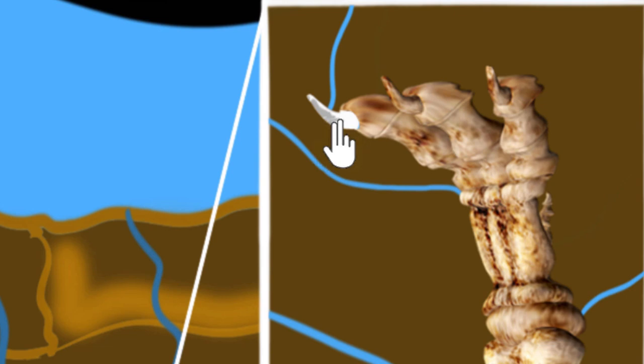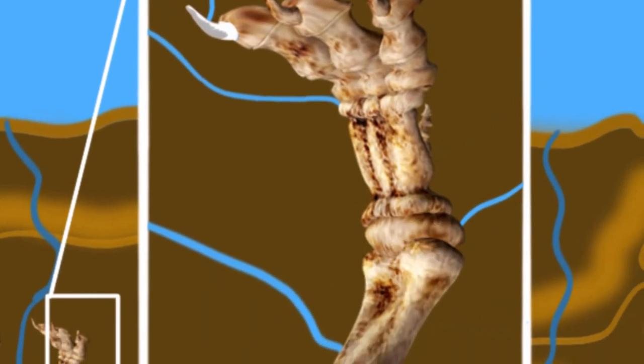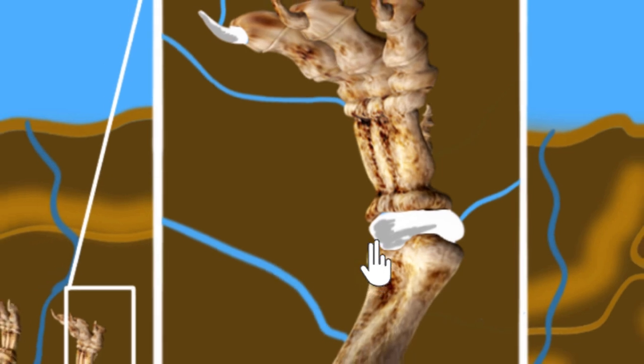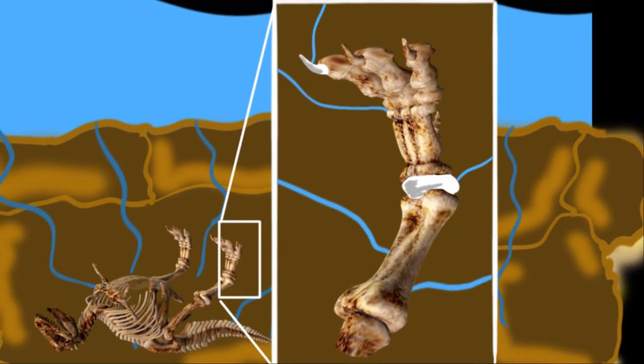So now this claw has turned into stone. And the same thing might happen over here. Maybe this part of the bone starts dissolving. That gets completely filled with water. Again, there are a lot of minerals present. The water evaporates, leaving behind these minerals. And over time, this whole thing is now covered with minerals. That part has been converted to stone.